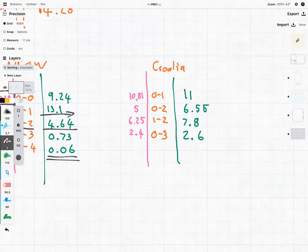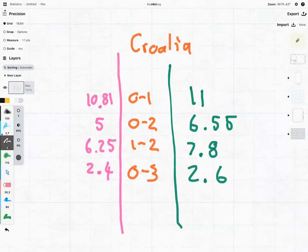And on the Croatian side, we were also a lot closer with a slight variation favoring the model. We've got 11% to 10.8, 6.55 to 5, 7.8 to 6.24, and 2.6 to 2.4.